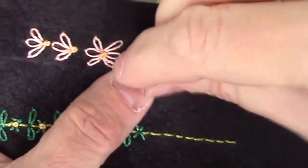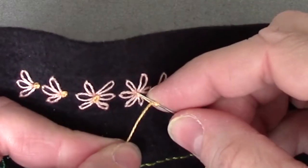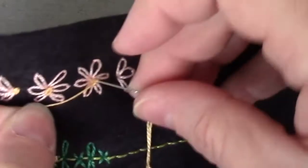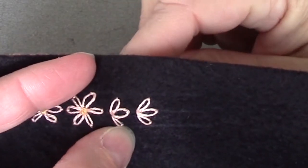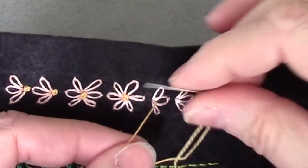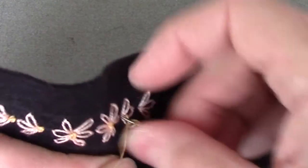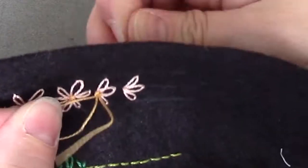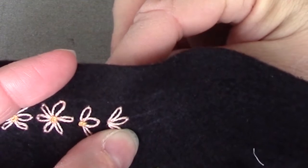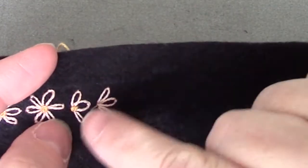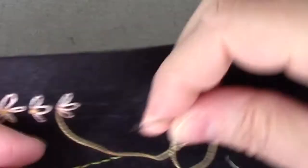To finish it off, we are going to come in and put a colonial knot in the center of each of those. You could also use a bead or a French knot. A pistol stitch might be kind of cool too. If you added a pistol stitch with the knot coming into the center and the straight coming out, you'd kind of have a shooting star flower.